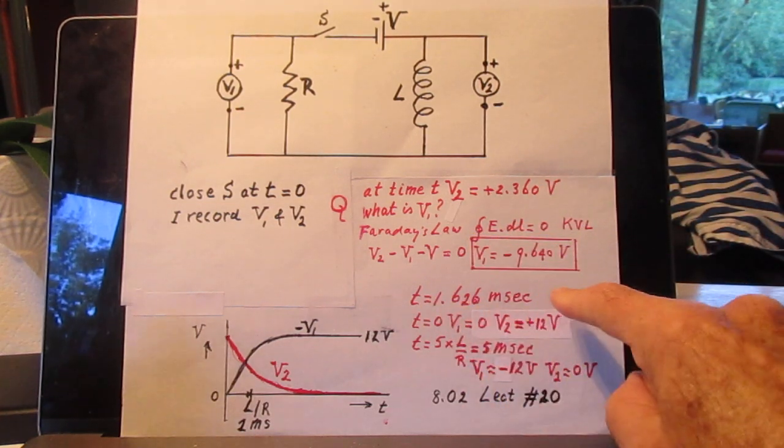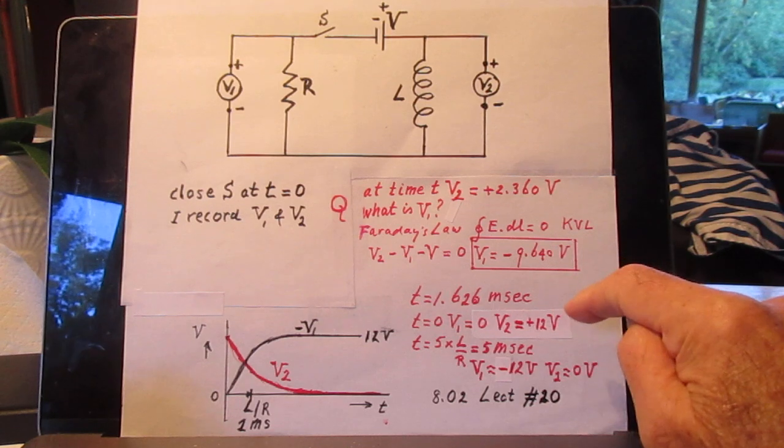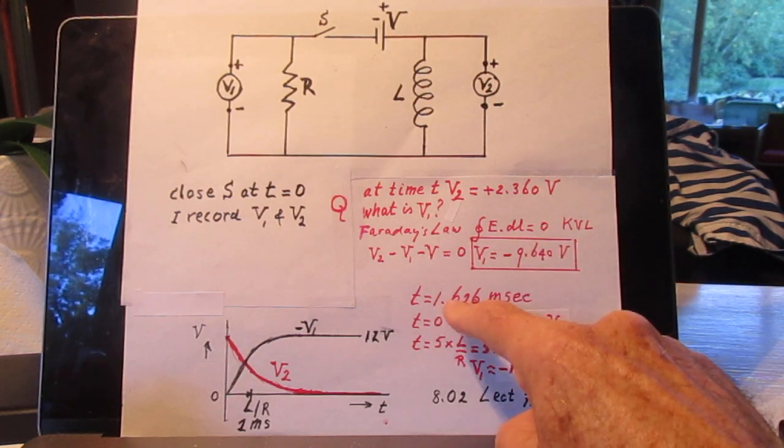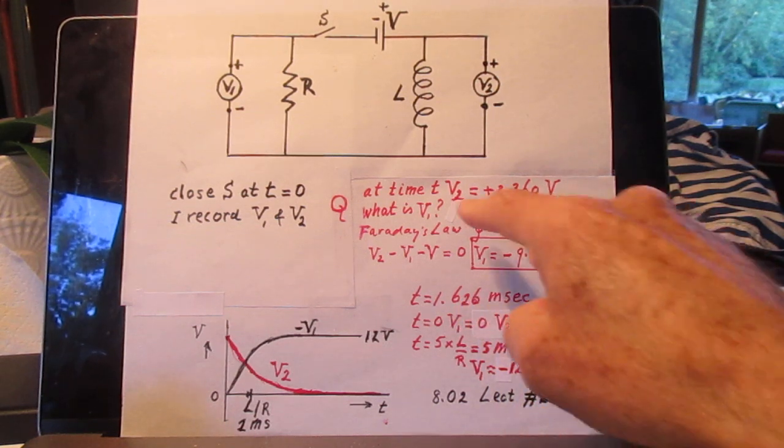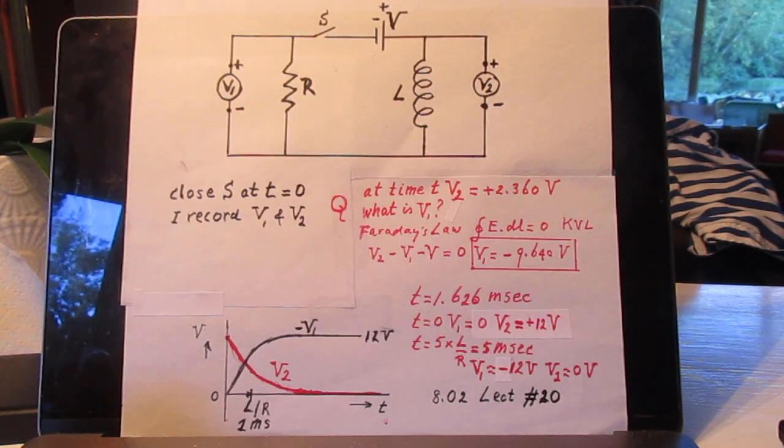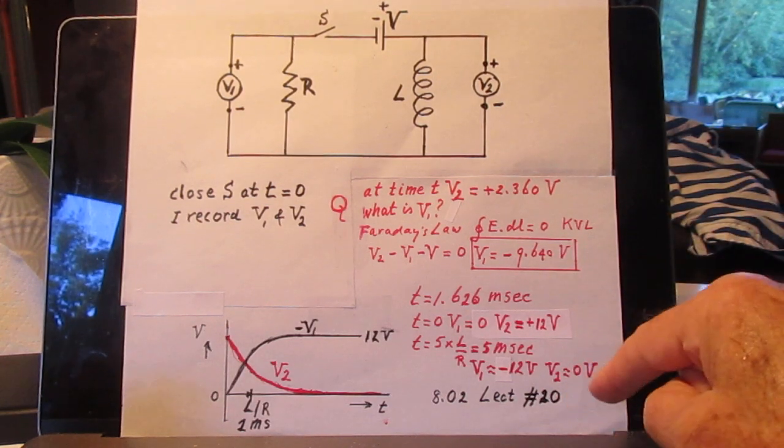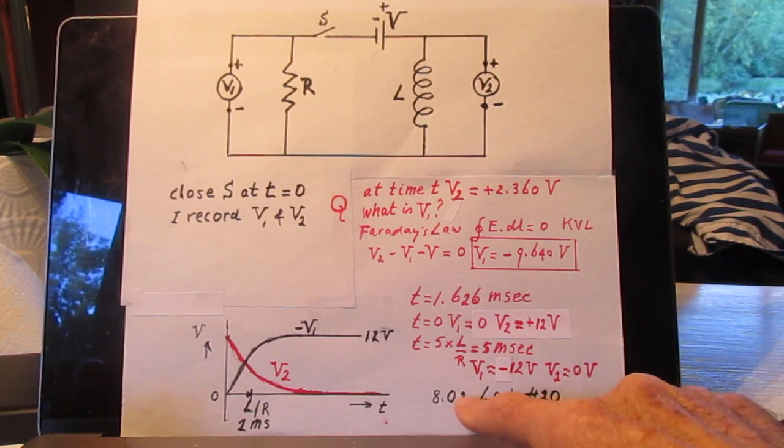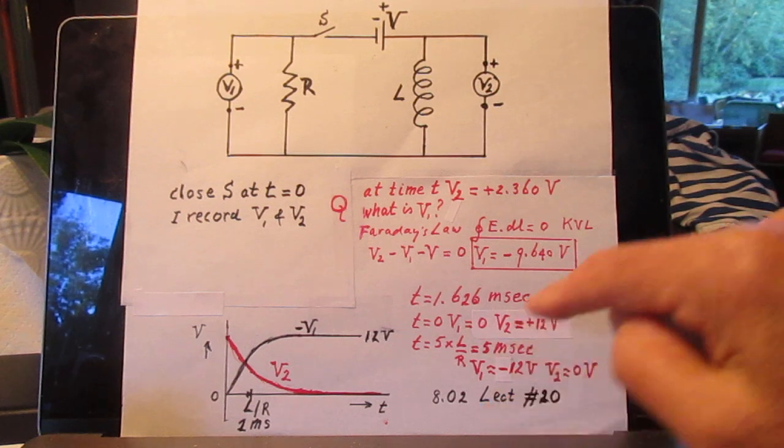The time, I didn't ask you to calculate the time, the time that this happens is 1.626 milliseconds after T equals 0. If you want to brush up on L-R circuits, watch my lecture 802, lecture number 20.